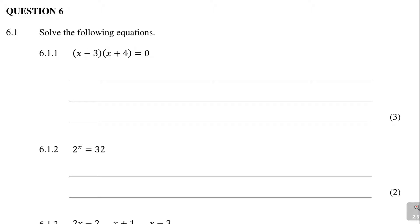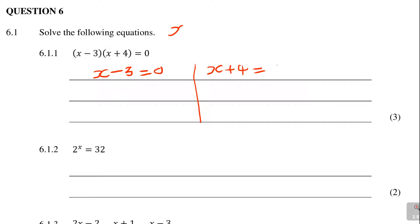x minus 3, x plus 4 is equal to 0. When they give it like this — with x minus 3 and x plus 4 already in brackets — you just say, let's work it right here. You say x minus 3 equals 0, or x plus 4 equals 0. It's already done for you.